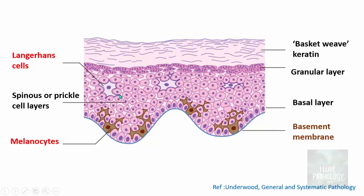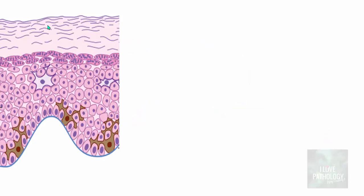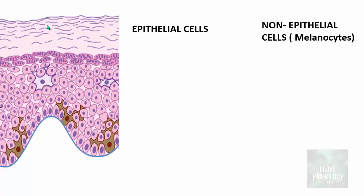Langerhans cells are antigen-presenting cells. They are the first to react when skin is exposed to extraneous agents, presenting antigens to the immune system. Do not confuse these with Langhans giant cells found in tuberculosis. So the epidermis consists of epithelial cells and non-epithelial cells — predominantly melanocytes, along with Langerhans cells.